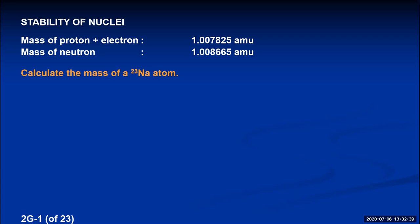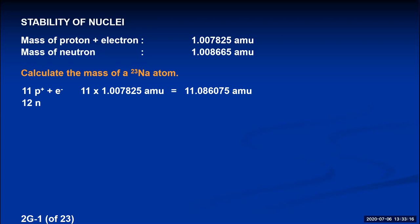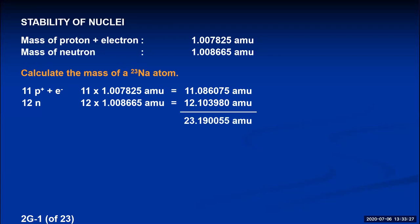We'll do an example: calculating the mass of a sodium-23 atom. The atomic number of sodium is 11, which means sodium atoms have 11 protons and 11 electrons. Taking the mass of a proton plus electron and multiplying by 11 gives 11.086075 AMUs. Because the mass number is 23, subtracting 11 from 23 tells us sodium-23 has 12 neutrons, with a mass of 12.103980 AMUs. Adding these up gives the expected mass of a sodium-23 atom: 23.190055 AMUs.